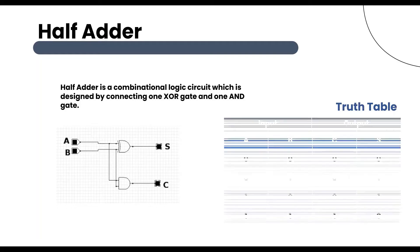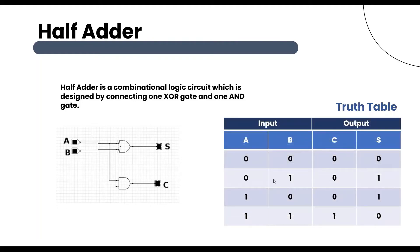This is the truth table of the half adder. When 0 plus 0, sum is 0 and carry is 0. Then 0 plus 1, sum is 1 and carry is 0. Here 1 plus 0, sum is 1 and carry is 0. And 1 plus 1, sum is 0 and carry is 1.